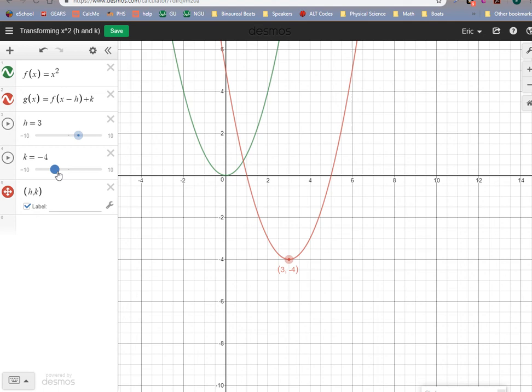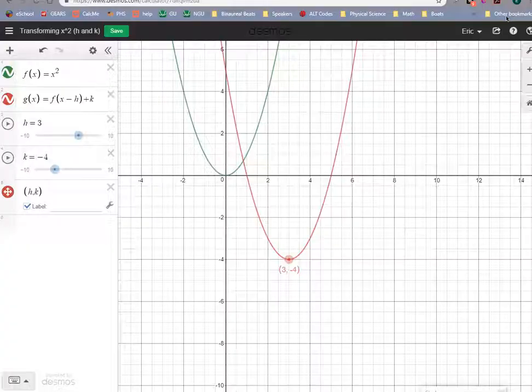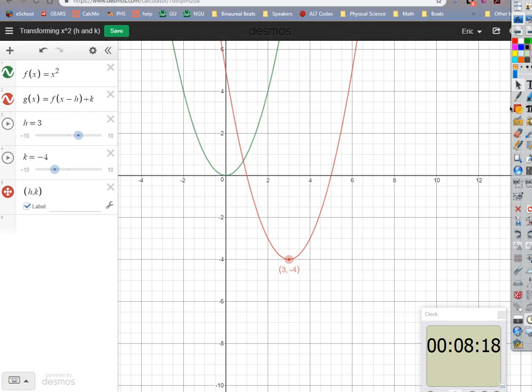So what would this equation be then? That equation would be, if I wrote it out, the red graph would just be g of x equals the quantity x minus 3 squared minus 4. Because the green graph has been two transformations, two translations. We slid it to the right by 3, and that's h, and we slid it down by 4, and that's our value of k.